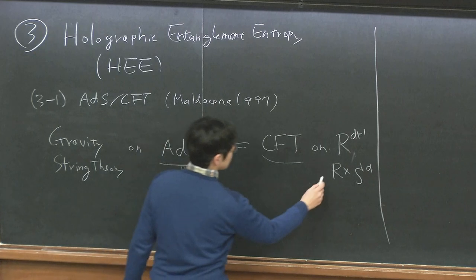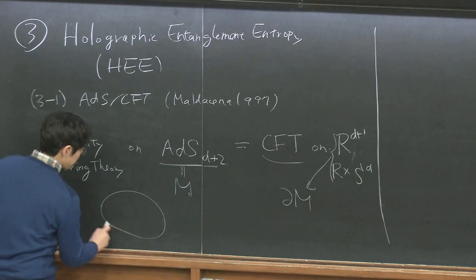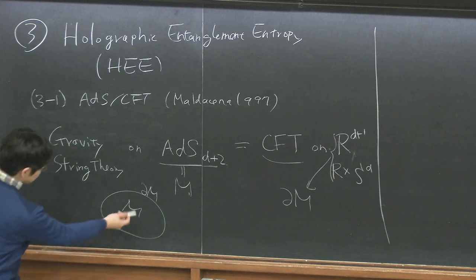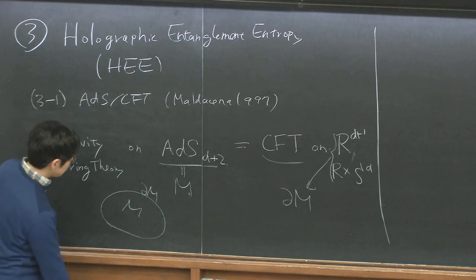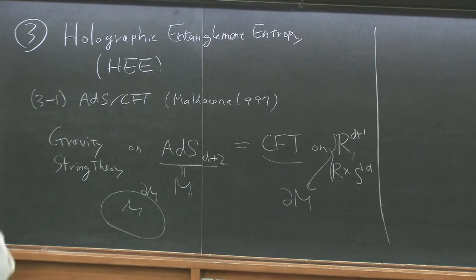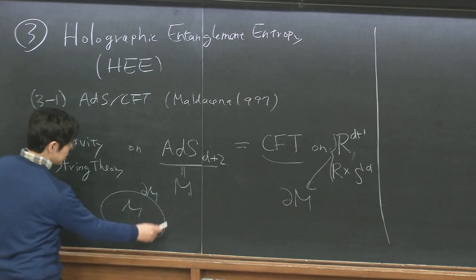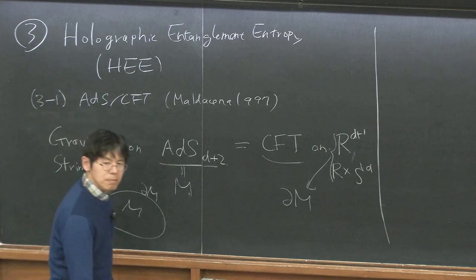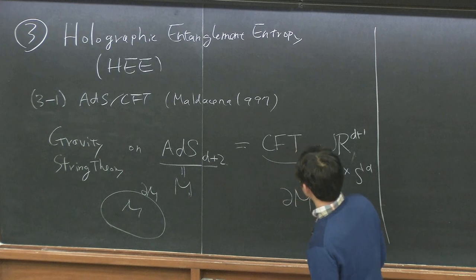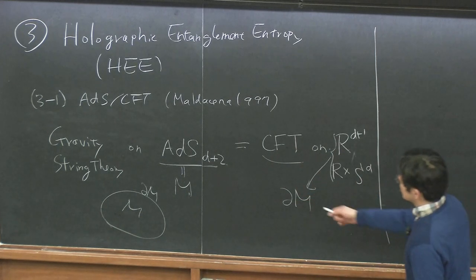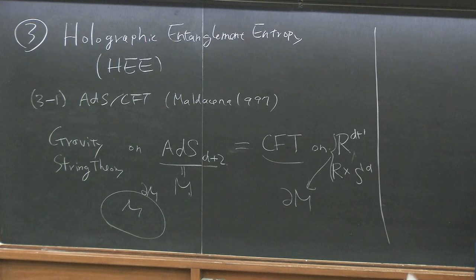Typically this CFT is defined on the boundary of the bulk spacetime M. If we have some bulk space M, then on the boundary we have the holographic dual. We can see from the Bekenstein-Hawking formula of entropy that degrees of freedom in gravity look like one dimension lower — entropy is proportional to area, not volume. That suggests gravity theory is equivalent to some non-gravitational theory living on one dimension lower space. ADS-CFT can be rigorously understood in string theory, even though a rigorous proof is still missing.